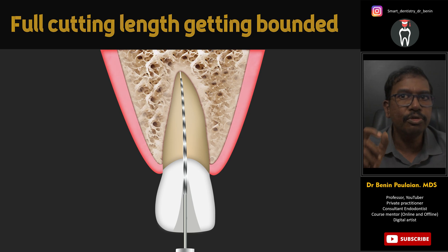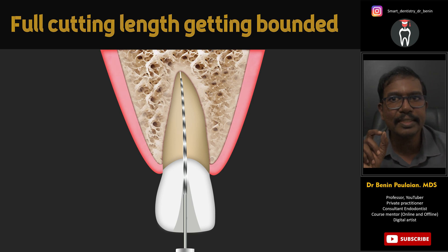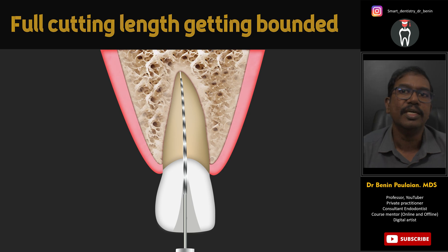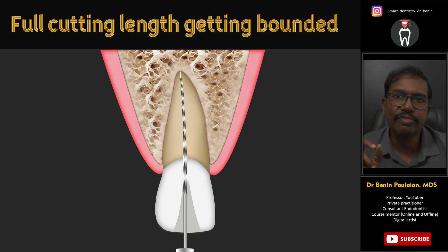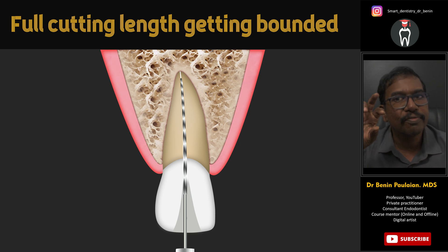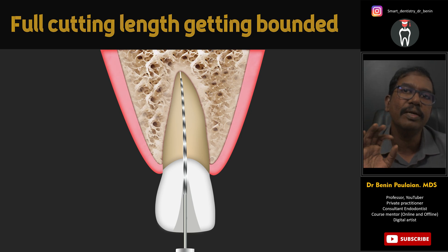There is no more rotation of the tip happening while you are rotating the handle. So what is the consequence? Whenever you are rotating the handle of the file and the tip is not rotating, somewhere in between the file will undergo twisting and it will break.